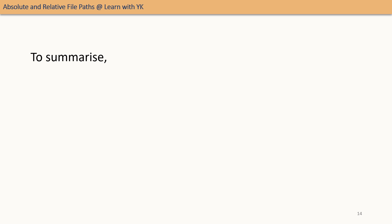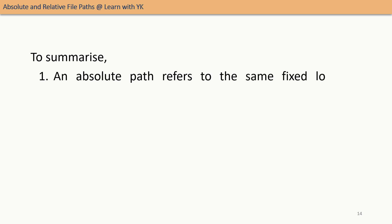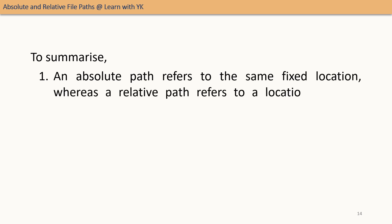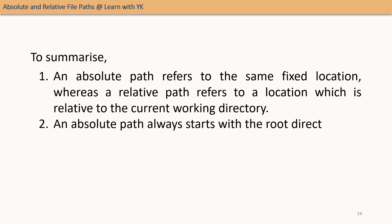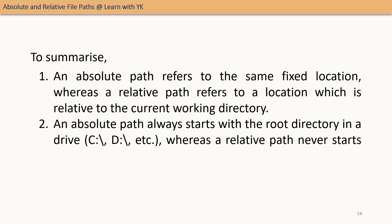To summarize: an absolute path refers to the same fixed location, whereas a relative path refers to a location related to the current working directory. An absolute path always starts with the root directory — a drive such as C: or D: — whereas a relative path never starts with a drive name. With this, I hope the concept of absolute and relative file paths is clear, and you will be able to decide when to use which file path in your code.